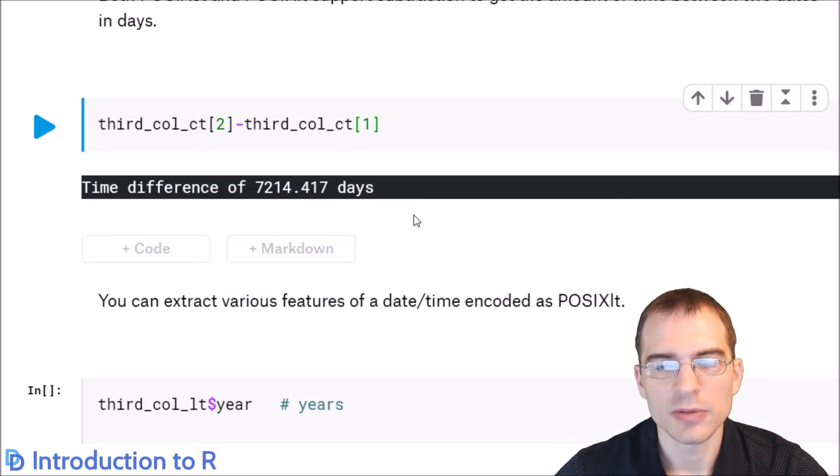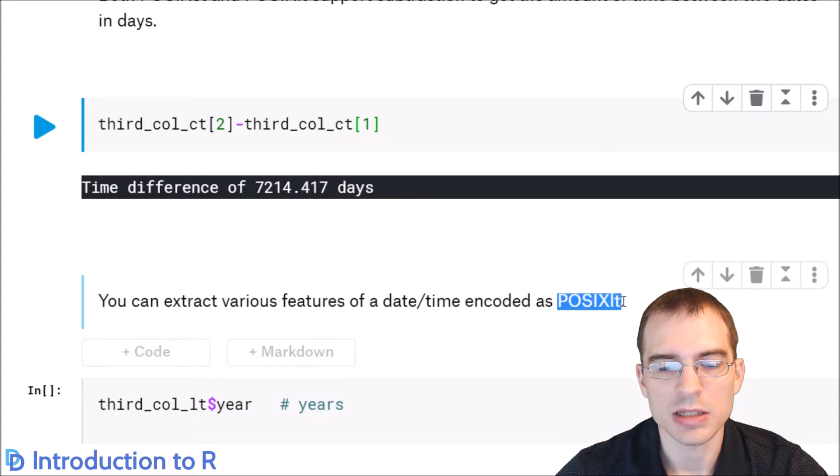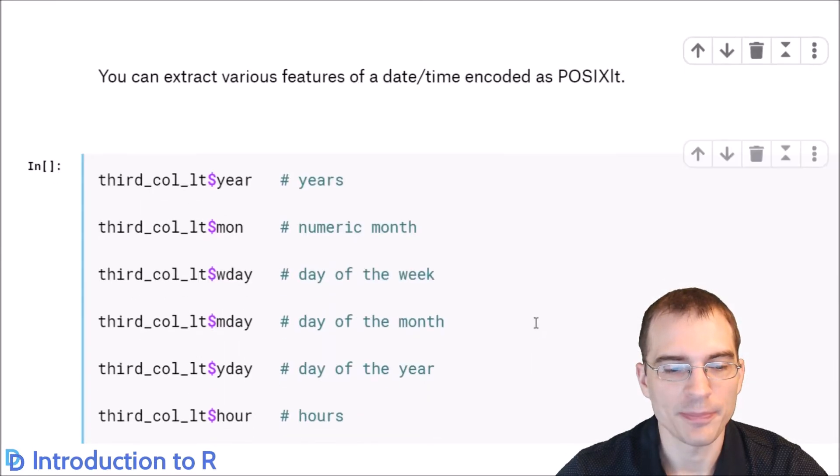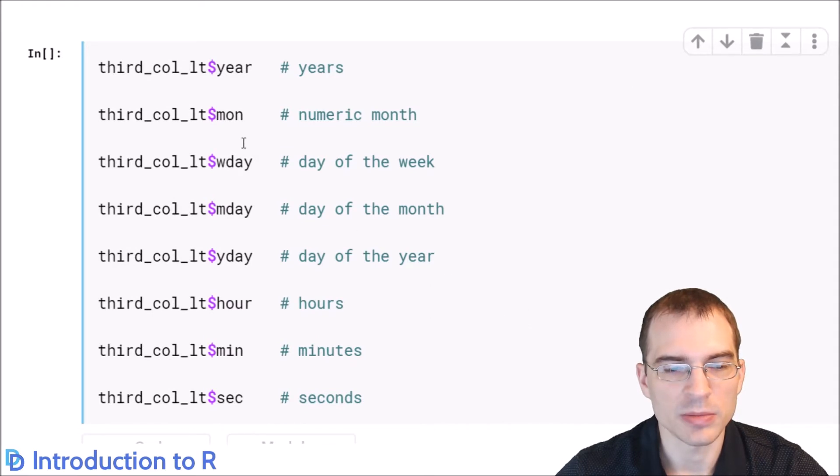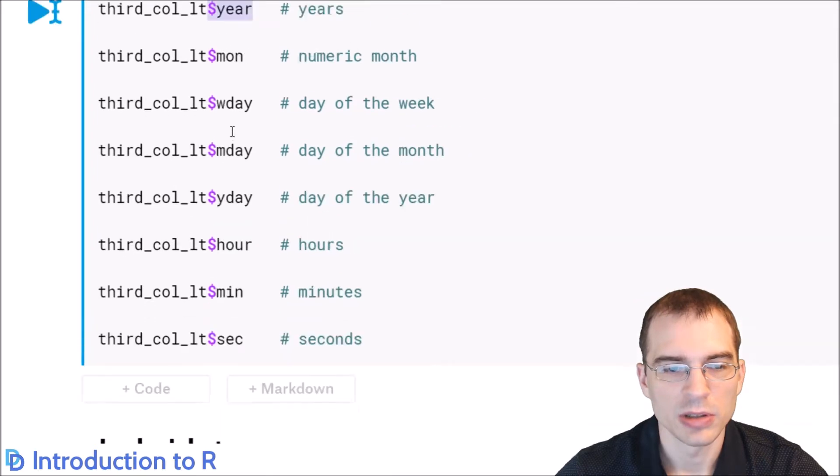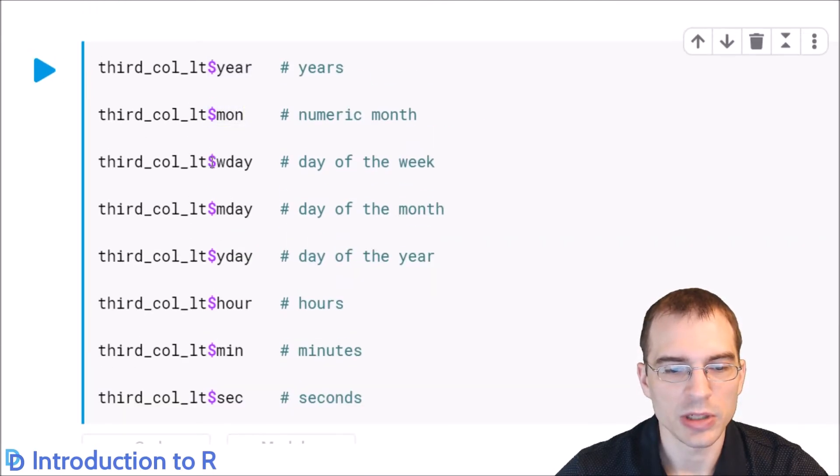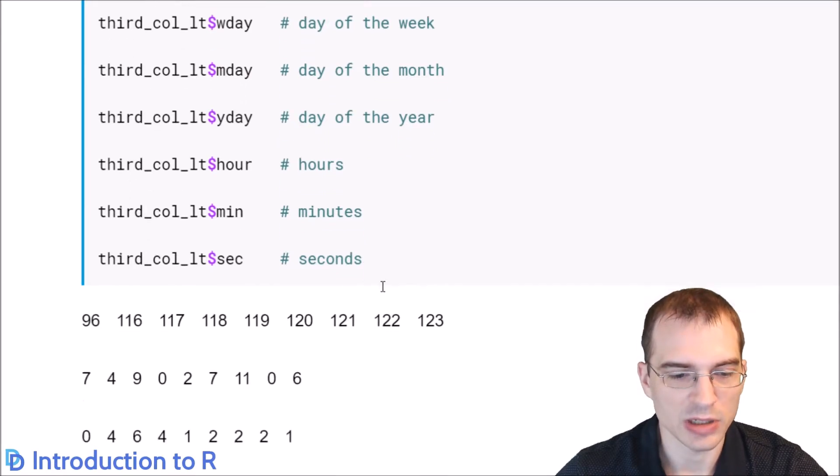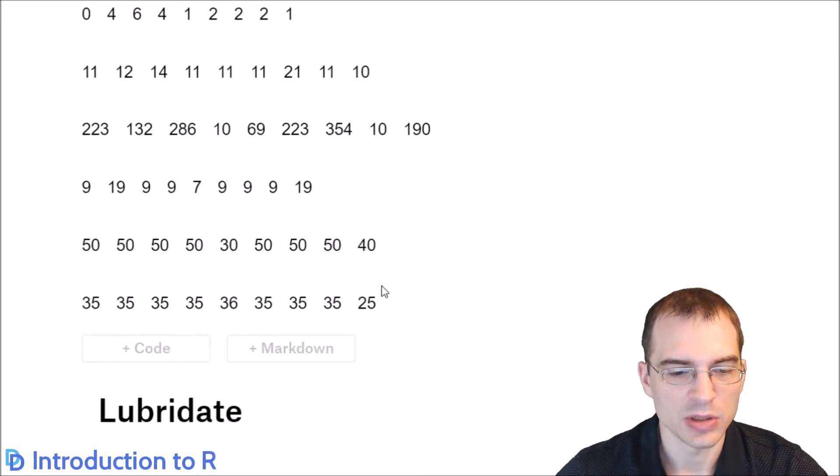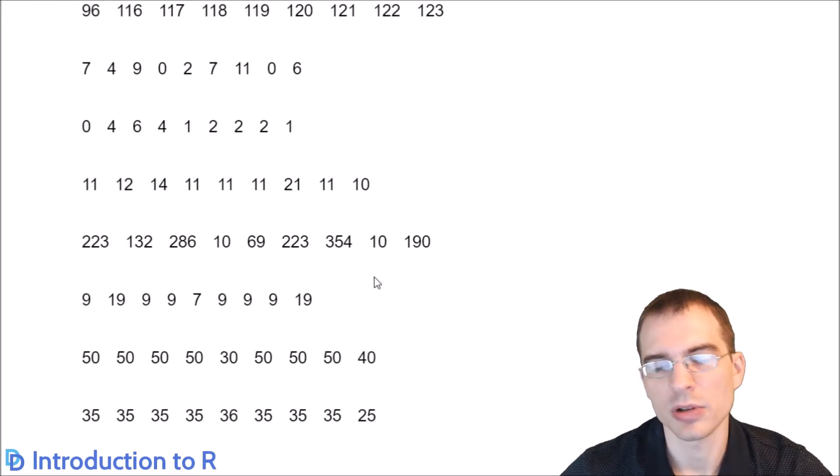You can also extract a variety of features from dates that are in the POSIXlt format. Once you have something in that format, you can get years with dollar sign year, numeric months with dollar sign mon, the day of the week with dollar sign wday, the day of the month with mday, day of the year with yday, hours with hour, minutes with min, seconds with sec. That allows you to extract a lot of specific information from the dates if you need it. It's a fairly common preprocessing task for analysis and predictive modeling to extract features like this from a full date time.